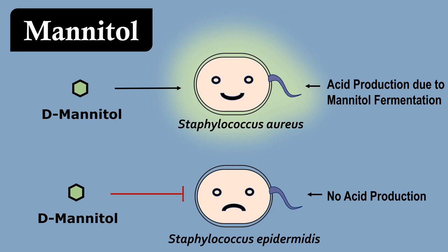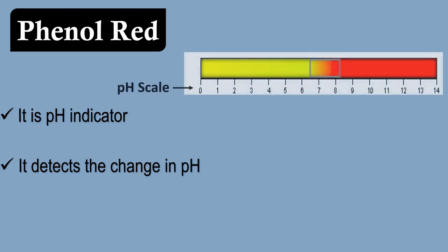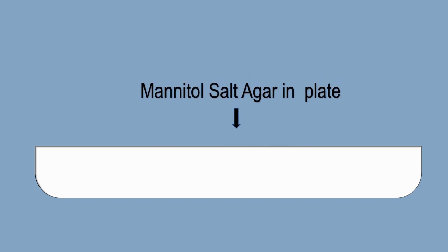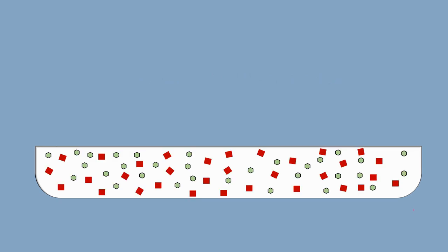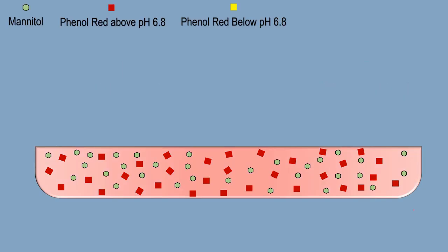So, how do we detect the acid production or change in pH in this case? This is where phenol red comes into the picture. Phenol red is a pH indicator and it detects the change in pH. When the pH of the medium is below 6.8, the medium will appear yellow in color, and at neutral pH, around 6.9 to 8.4, the medium will appear red in color. Suppose this is the mannitol salt agar layer in petri plate. The two types of molecules shown in the agar layer are mannitol and phenol red. Since the pH of the medium is neutral, the medium appears red in color.